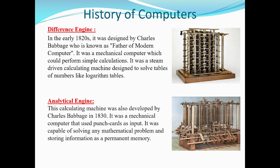For inputting data in the Analytical Engine, Charles Babbage used punched cards, and this invention was developed in 1830. In the Difference Engine from 1820 there was no storage capability, but in the Analytical Engine he used permanent memory to store information. The Analytical Engine was much more advanced than the Difference Engine — while the Difference Engine could only perform simple calculations, the Analytical Engine had the capability to solve any mathematical problem.